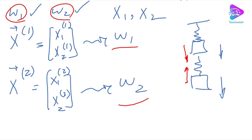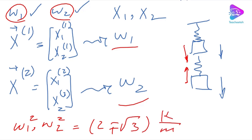To summarize: for this example, we found ω1² and ω2² = (2 ∓ √3)·k/m. In the next tutorial, we'll use these natural frequencies to find the mode shapes, amplitude ratios, and the system response. The procedure is straightforward and repeatable for all two degree of freedom systems. Stay tuned for future videos — thank you.